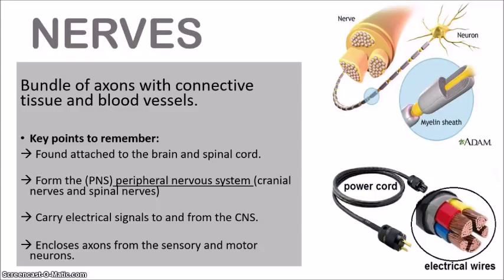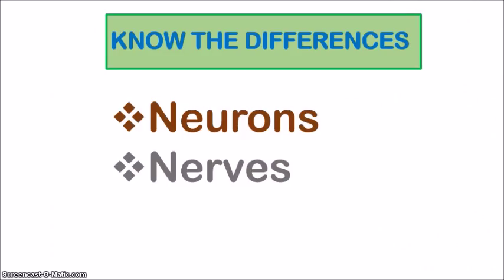So just remember the difference: the nerve is the entire structure that encloses the axons of the neurons, while the neurons are the actual nerve cells which transmit the electrical signals. Going back to the diagram — think of the nerve as the power cable and the axons of the neurons as the electrical wires. I hope you now have a better understanding of the differences between neurons and nerves.